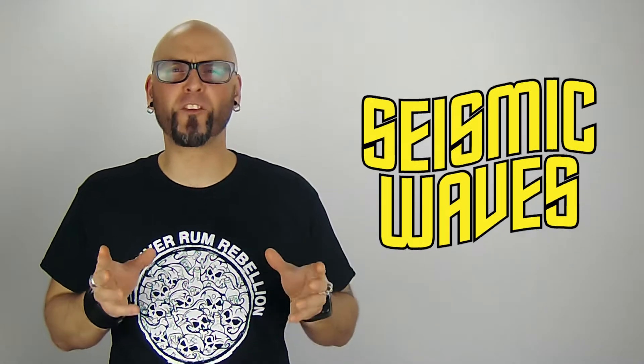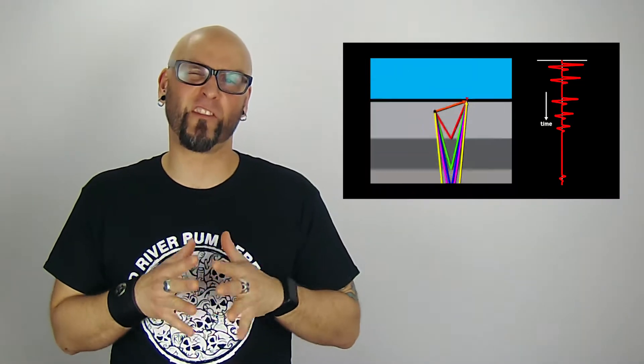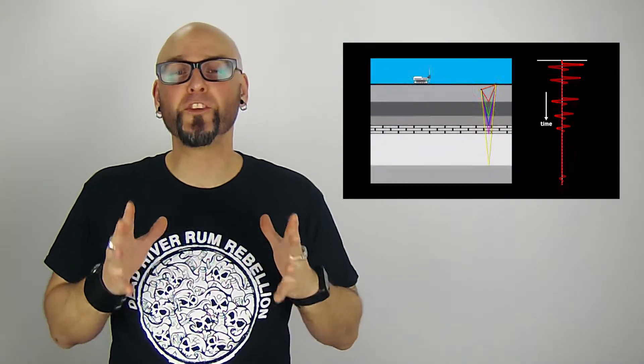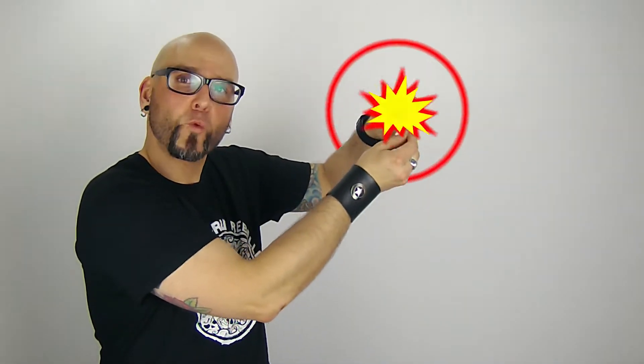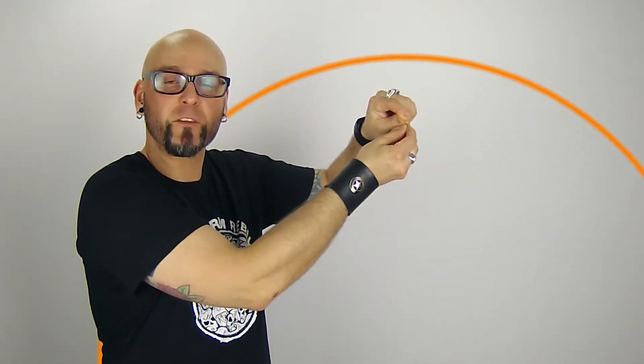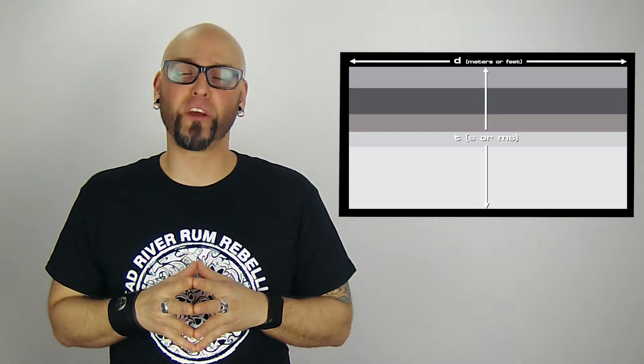In a previous video I talked about a simple seismic situation which included one geophone and one source. What I described was the zero offset case, where the geophone picked up reflected waves directly underneath our seismic source. This allowed us to generate a zero offset geological section in time.